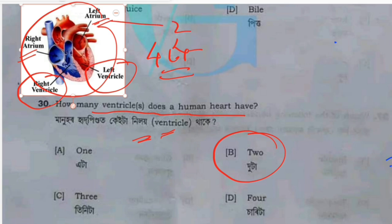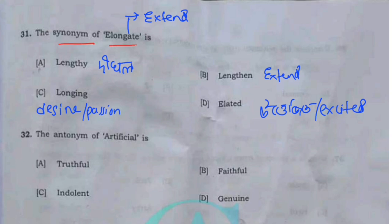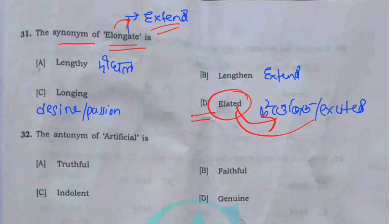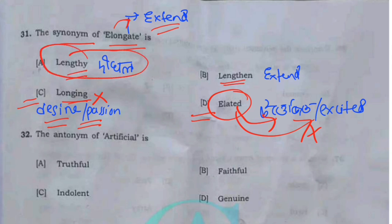The synonym of elongate — elongate means to extend. Option B is the correct answer. The synonym of elongate is lengthen — lengthen means to extend or make longer. So option B, lengthen, is our correct answer. The synonym of elongated is lengthen.